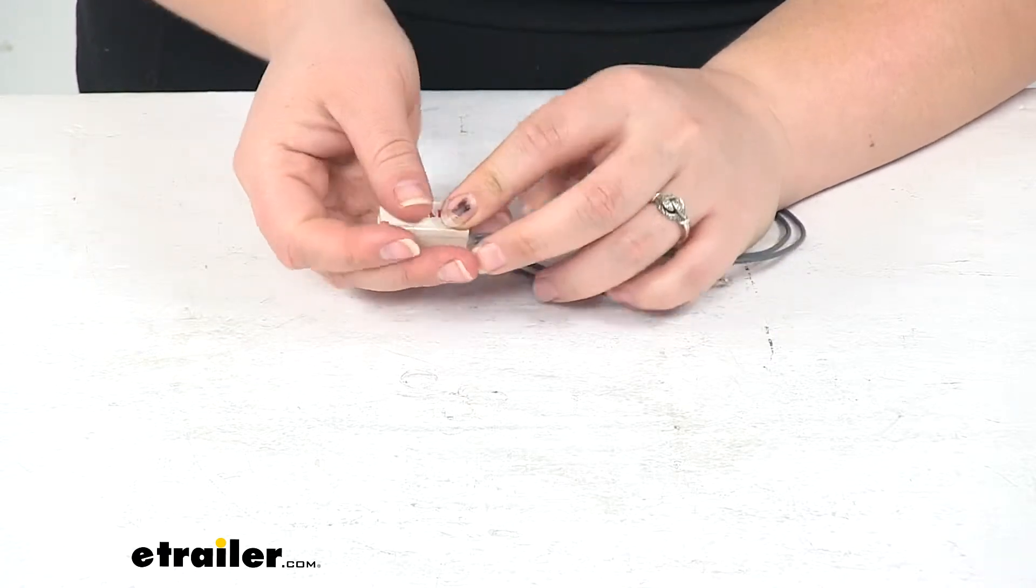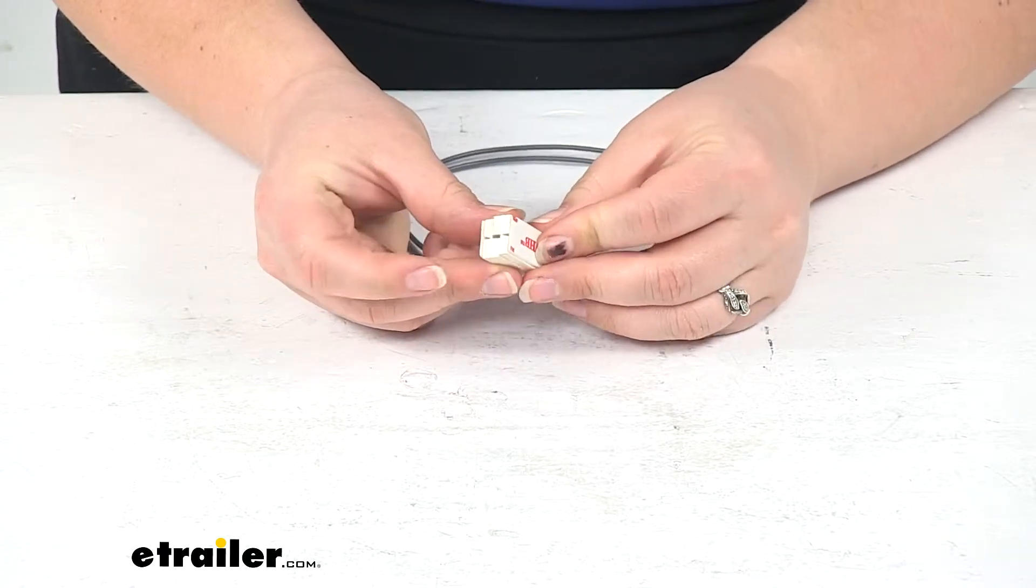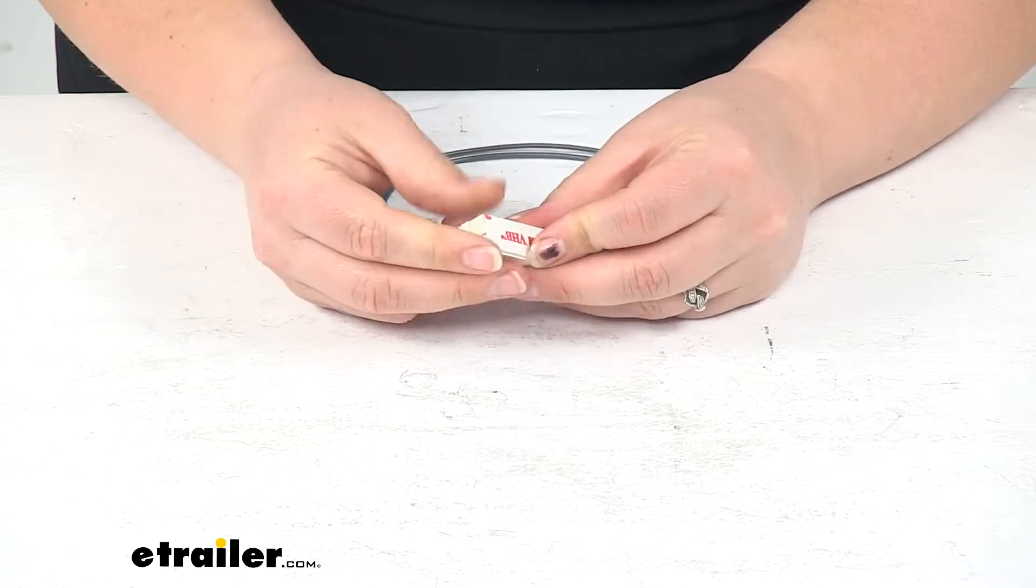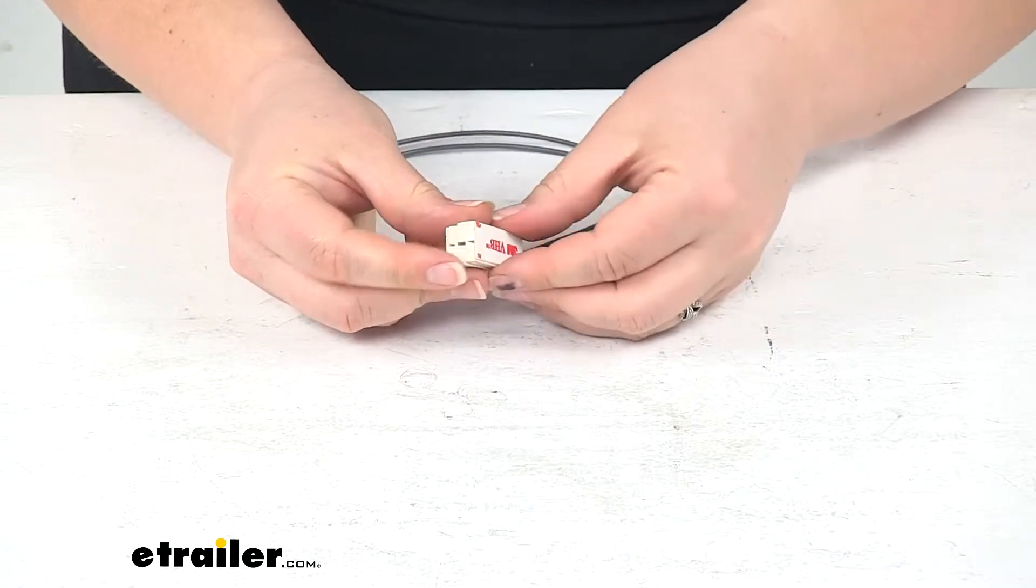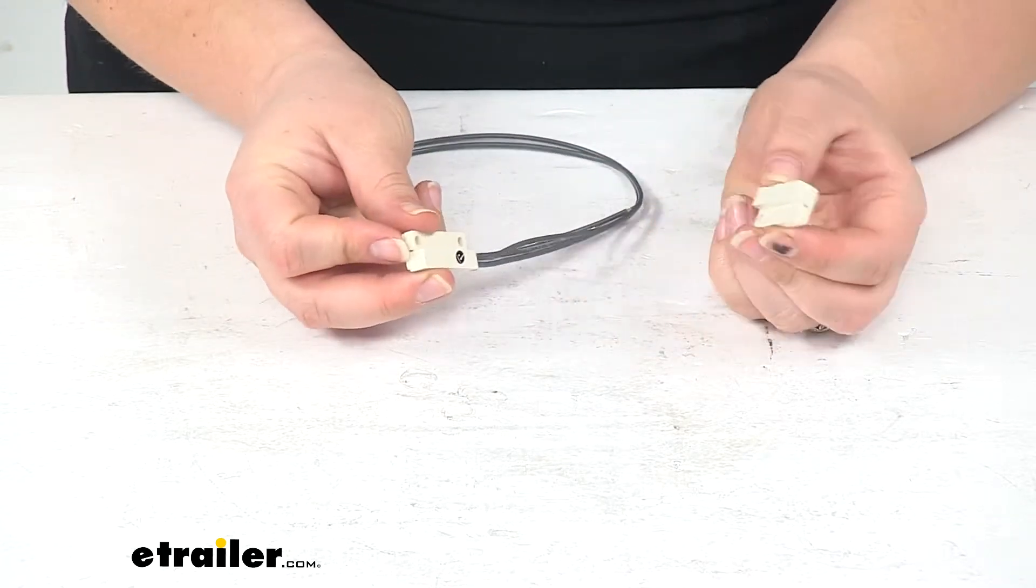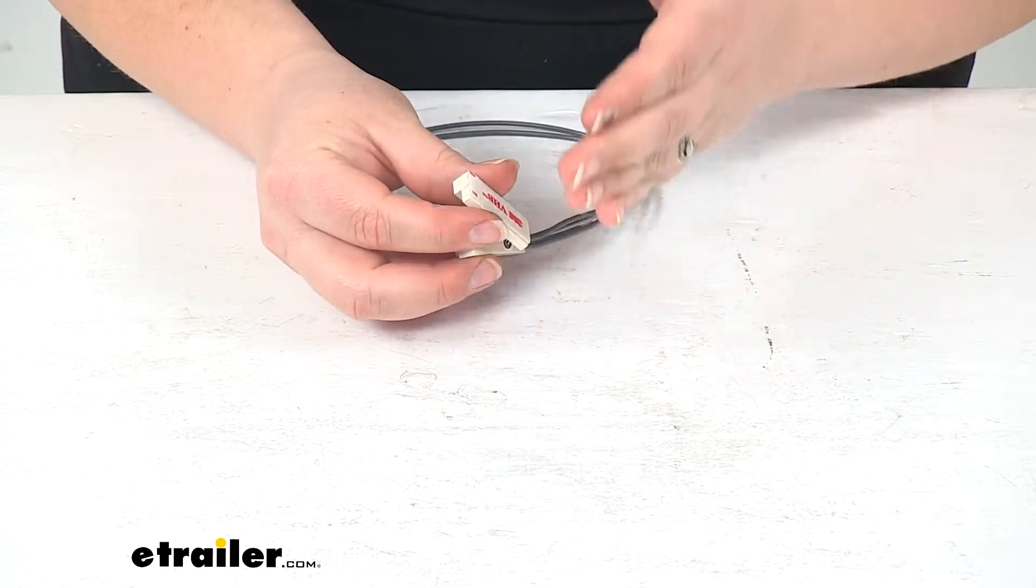that will put the two pieces of our switch together, and then that'll tell our steps to retract. Whenever we open the door, those two pieces will come apart, and that'll tell the steps to open out.